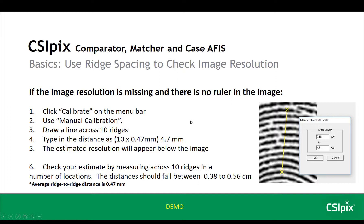If image resolution is missing and there's no ruler in the image, you can use this process to get an estimate of the image resolution. Click Calibrate on the menu bar, use Manual Calibration, and draw a line across 10 ridges, trying to be perpendicular to the ridge flow. Type in the distance as 4.7 millimeters and click OK. The estimated resolution will appear below the image. To check your estimate, you can measure across 10 ridges in a bunch of different locations — the distance should fall between 0.38 and 0.56 centimeters.